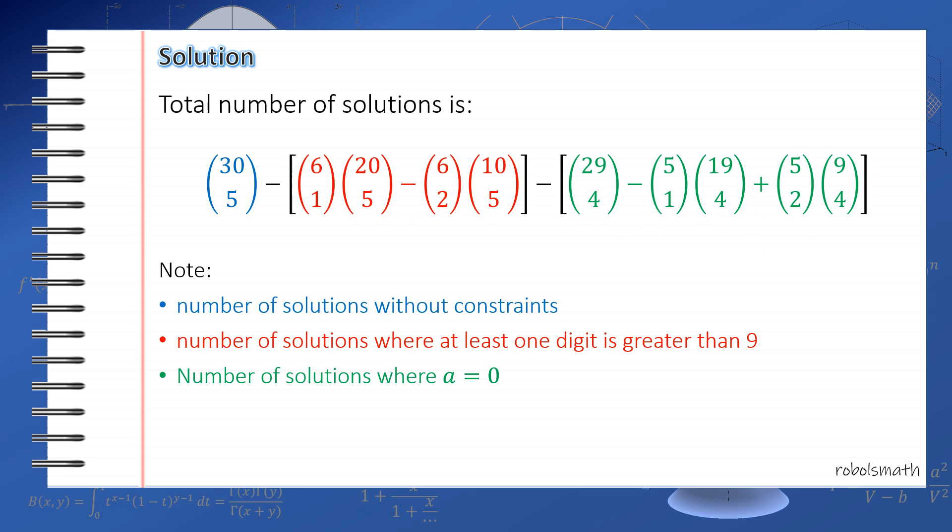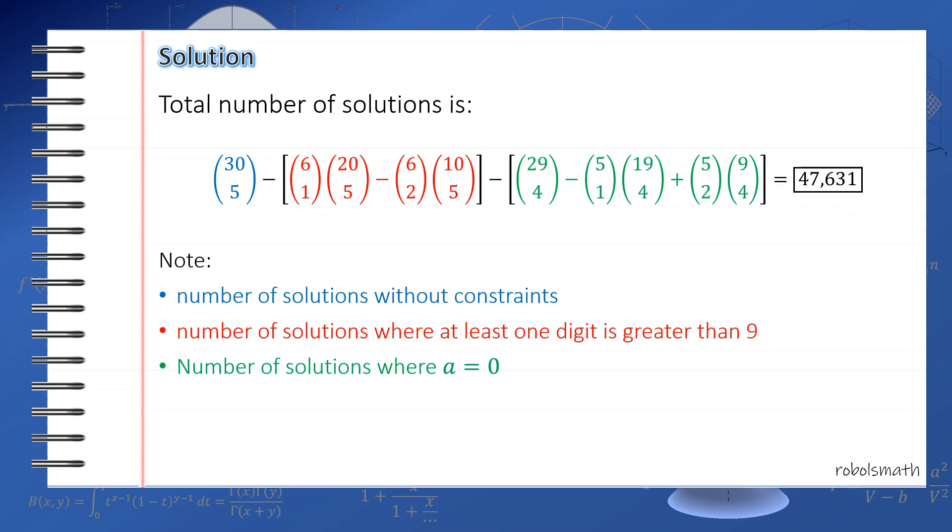So the total here is 47,631. I highly doubt this would be asked in oral competitions. Because 30 taken 5, I mean, that by itself is difficult to compute. Plus, you have this many terms. I highly doubt it would be asked. But this might appear in written contests, like elimination rounds.